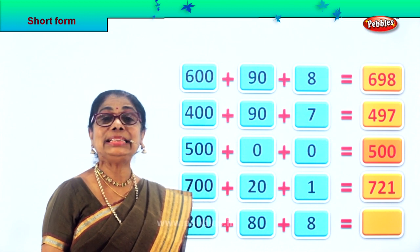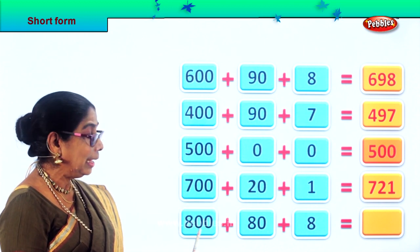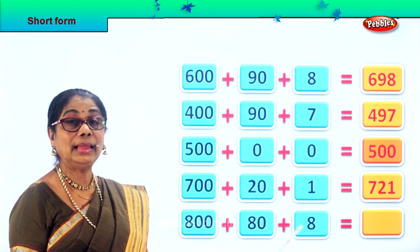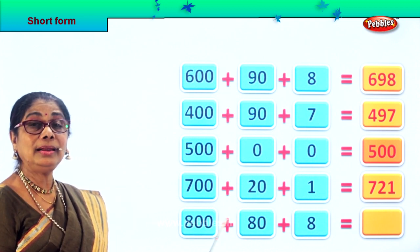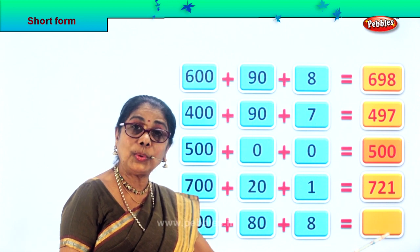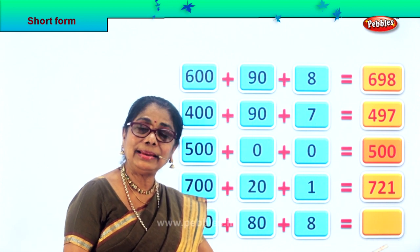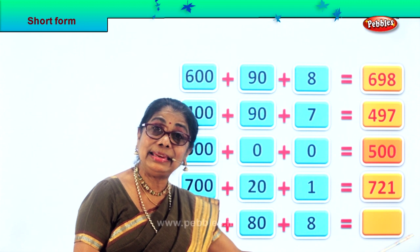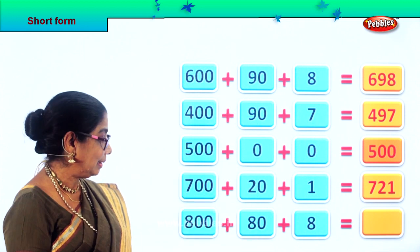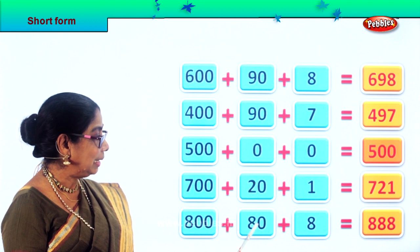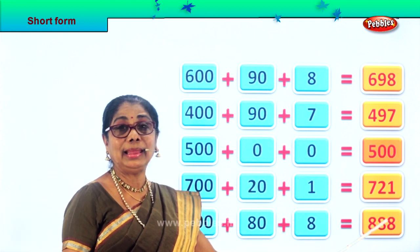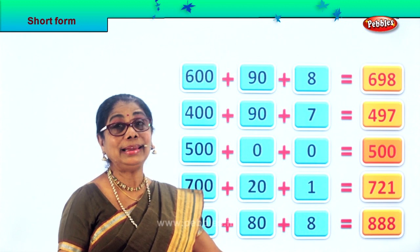What is the short form for 800 plus 80 plus 8? 800 plus 80 plus 8 is equal to 888. I hope you enjoyed this exercise.